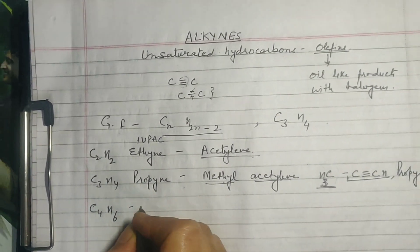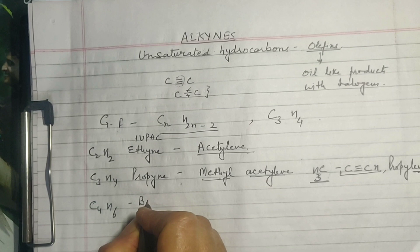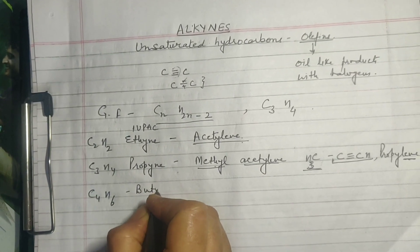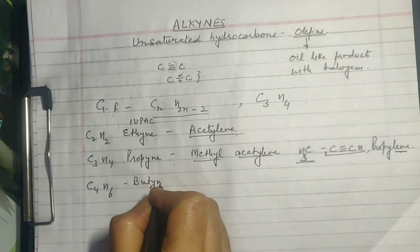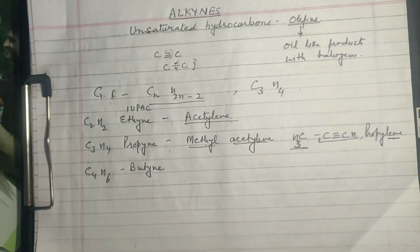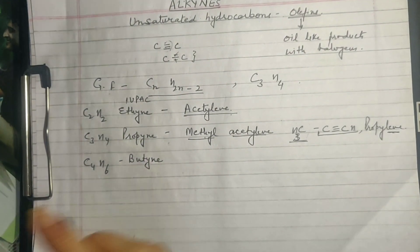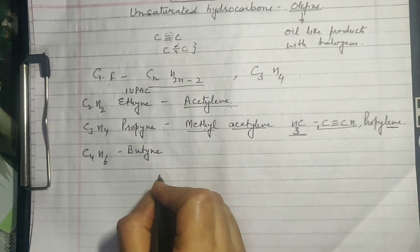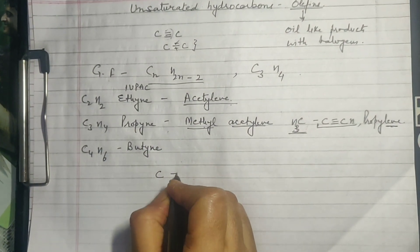Now if you look at the structural formula of Butyne with four carbon atoms, the triple bond can be placed in different positions, giving us isomers.